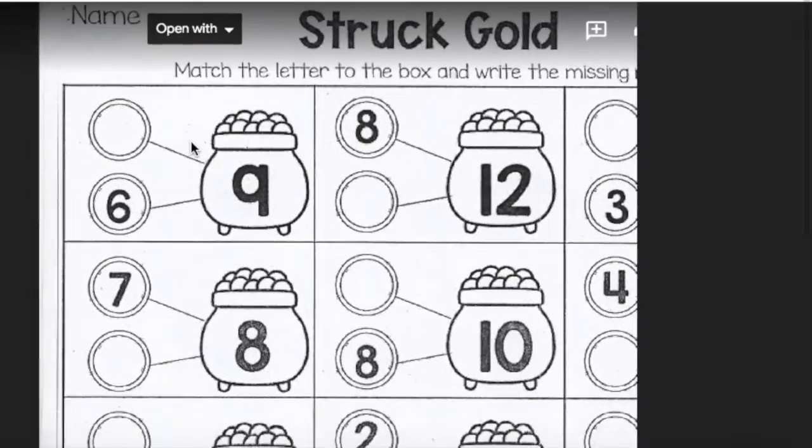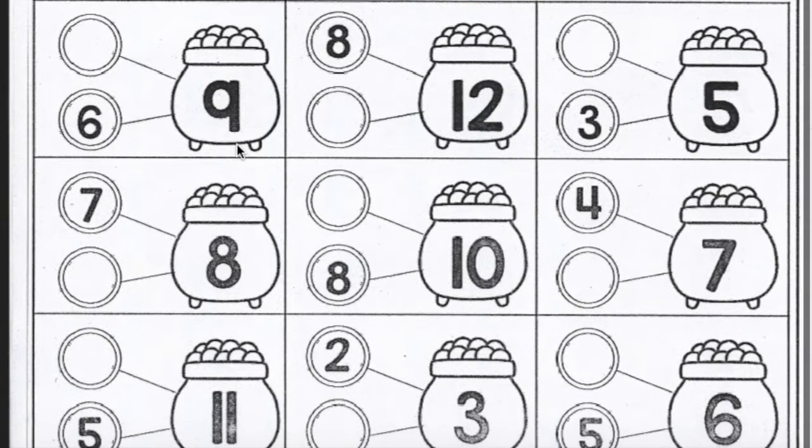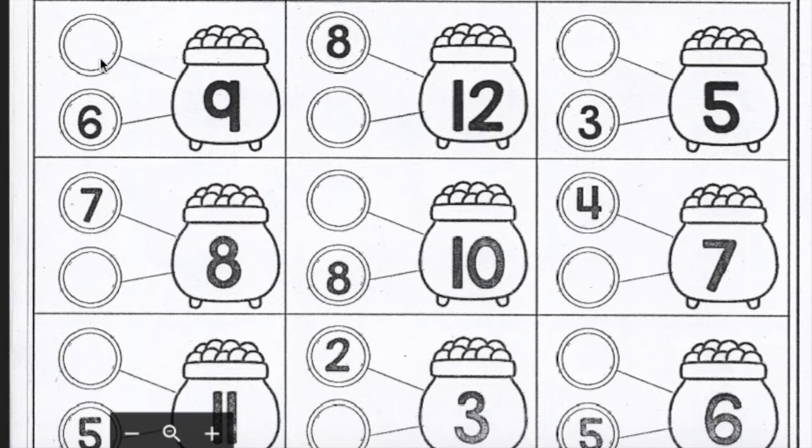Vamos a trabajar juntos la manera de encontrar las partes que faltan en una operación. Estos se llaman Number Bonds y quiere decir que en esta operación tenemos dos partes y un total y en este caso nos falta una de las partes que si las juntamos nos vamos a encontrar con un total.